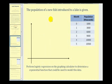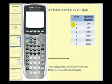Here a population of a new fish was introduced to a lake. And we're comparing the number of months since the introduction to the fish population in thousands. Let's create a scatter plot and see if a logistic function would be appropriate. So the first thing we're going to do is enter in our data. So we'll press the stat key and then enter.